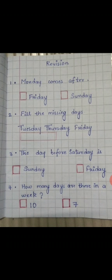Look here: Tuesday, Thursday, Friday. In between, there is one day missing. Which day is that? Wednesday — after Tuesday comes Wednesday. So you have to write the Wednesday spelling in that box.